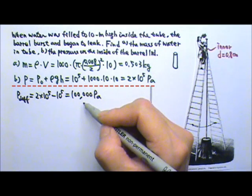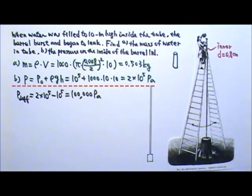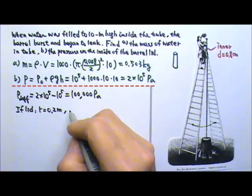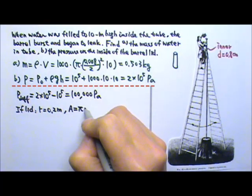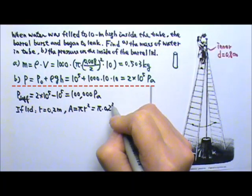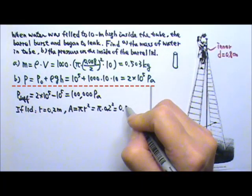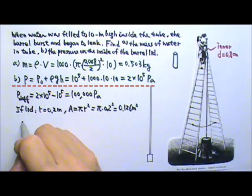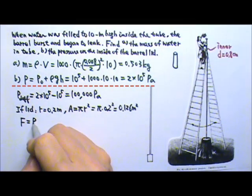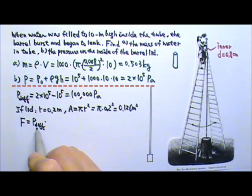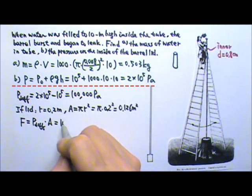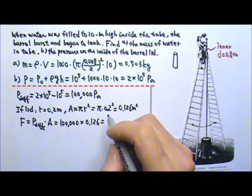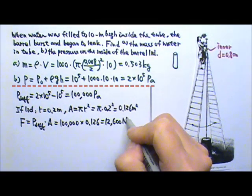That big a pressure difference created by only half a kilogram of water. If the lid of the barrel has a radius of 0.2 meters, that means the area of the barrel lid would be π R squared, π times 0.2 squared. We would have an area of about 0.126 meters squared. And that means the force on the lid created by this pressure difference would be force is pressure times the area. That's 100,000 times 0.126, which gives us 12,600 Newtons of force.